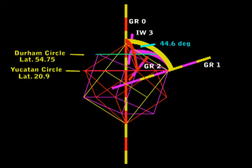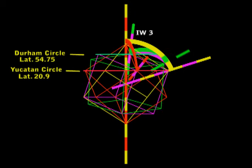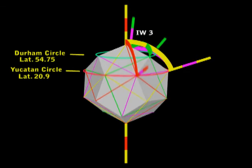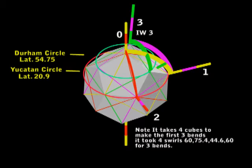I figure that the rotating axis vector should always come first. Okay, finally on this group, we rotate a green cube this time, 44.6, on the IW3 axis. And notice that the green cube vertices lie on the Durham circle also, from the purple.